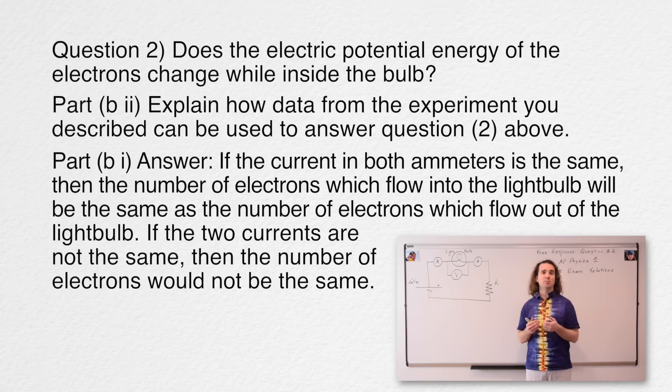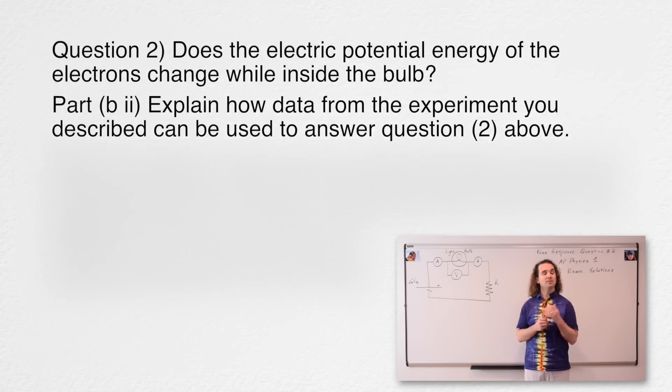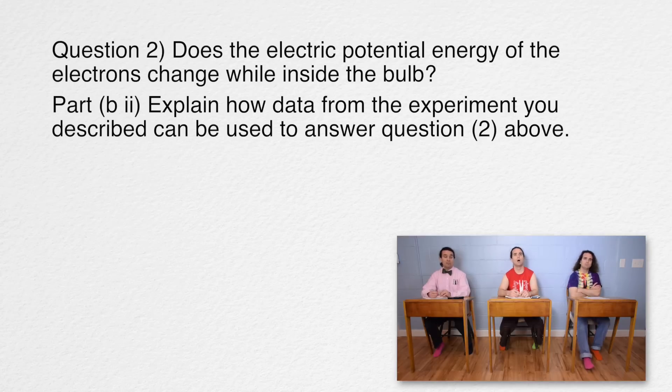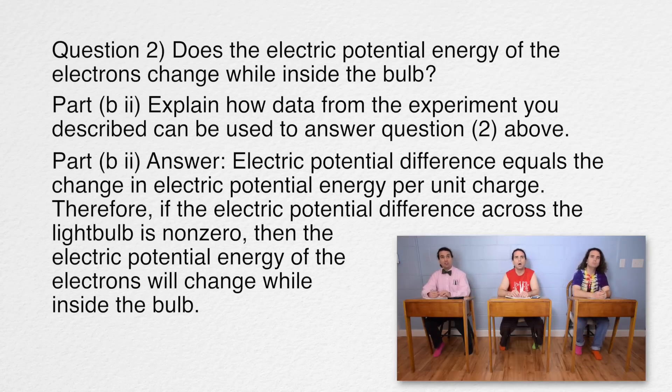And part B(ii) is, explain how the data from the experiment you described can be used to answer question two above. Billy? We need to write, electric potential difference equals the change in electric potential energy per unit charge. Therefore, if the electric potential difference across the light bulb is non-zero, then the electric potential energy of the electrons will change while inside the light bulb.